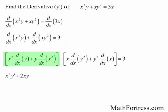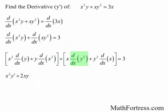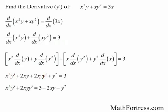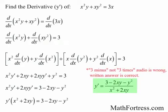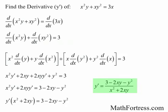Now for the next product: the derivative of x times y squared gives us x times the derivative of y squared plus y squared times the derivative of x. The derivative of y squared is equal to 2y times y prime by the chain rule, and the derivative of x is just 1. Now we solve for y prime. We get all the y prime terms on one side and everything else on the other side. Factoring out the y prime, and then dividing by x squared plus 2xy, the final derivative is equal to 3 minus 2xy minus y squared, all over x squared plus 2xy. More complicated derivatives require you to factor out the y prime term in order to solve for it.